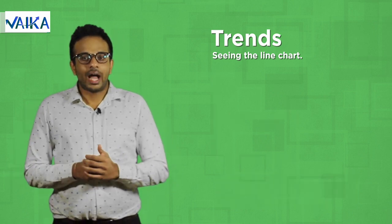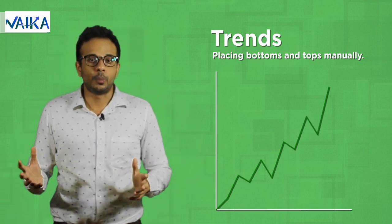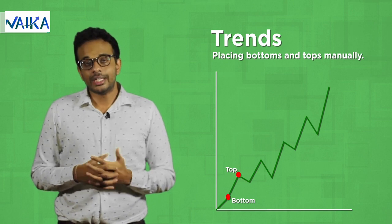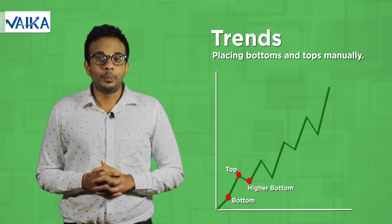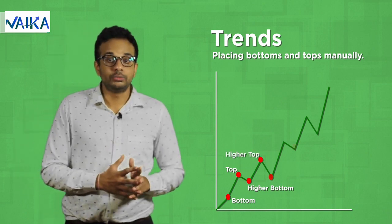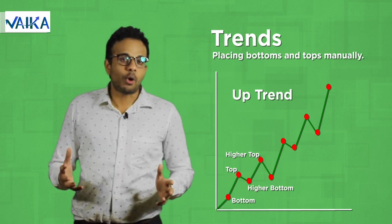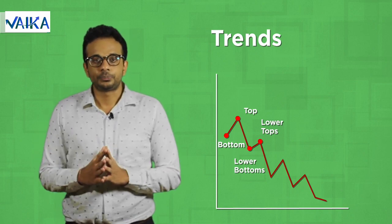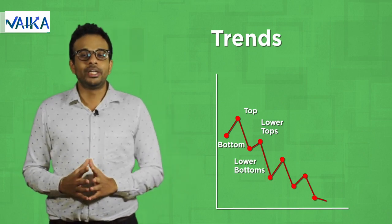The second way of identifying trends is by placing bottoms and tops manually on the price chart. This point is called a bottom and this point is called a top. Now, if the next bottom is higher than the previous bottom, it is called a higher bottom. And if the top is higher than the previous top, it is called a higher top. When you see a series of higher bottoms and higher tops on the price chart, it is said to be an uptrend. Similarly, we can plot lower bottoms and lower tops. When we see a series of lower bottoms and lower tops on the price chart, it is said to be a downtrend.